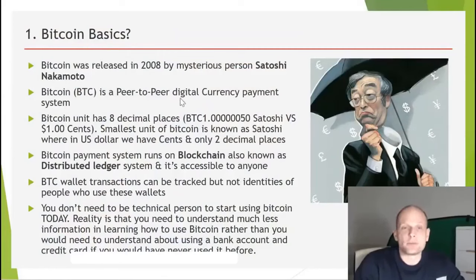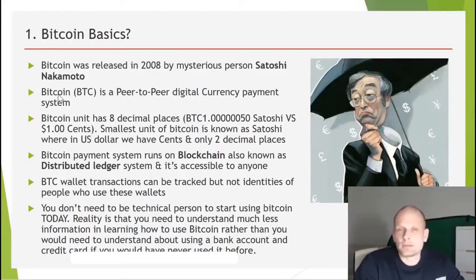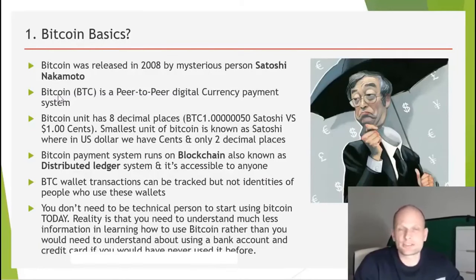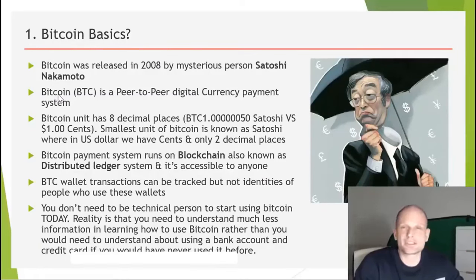Bitcoin is a peer-to-peer digital currency payment system. This means that you don't need banks anymore to make payments. If we want to make a payment to someone, they can send Bitcoin directly to us.